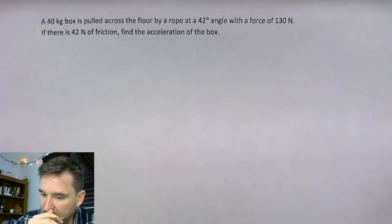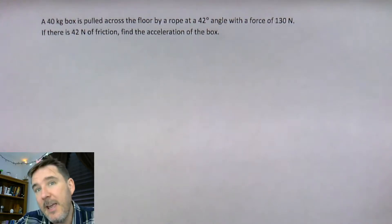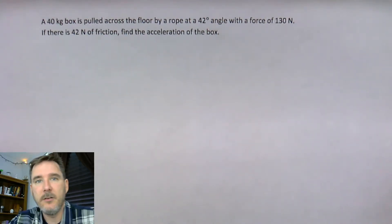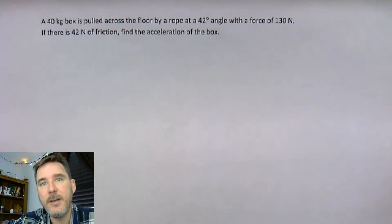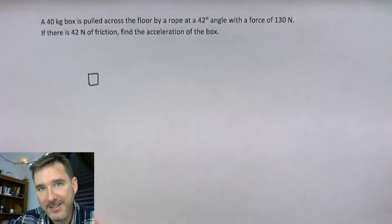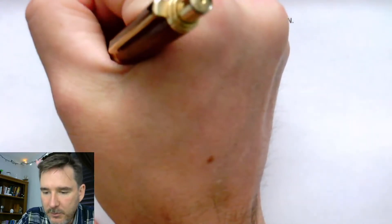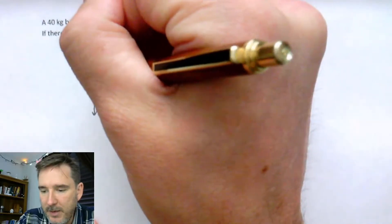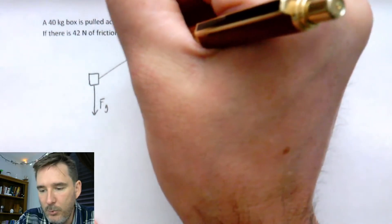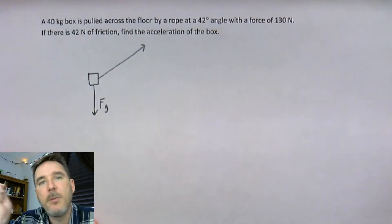It does not say to draw an accurate free body diagram, so I'm not going to worry about that — I'll try to be as accurate as I can but I won't break out a ruler or protractor. I'm going to draw it in a way that's just helpful. I'll start by drawing my box, and the first thing I want to draw is typically gravity, so gravity will be pulling downward. We have our 42 degree angle and 130 newtons of force — 42 degrees is pretty close to 45.